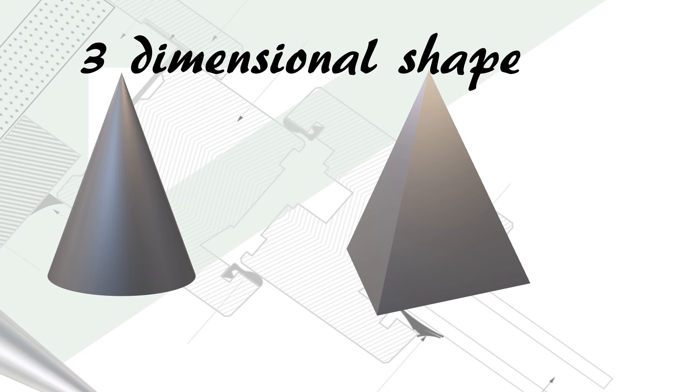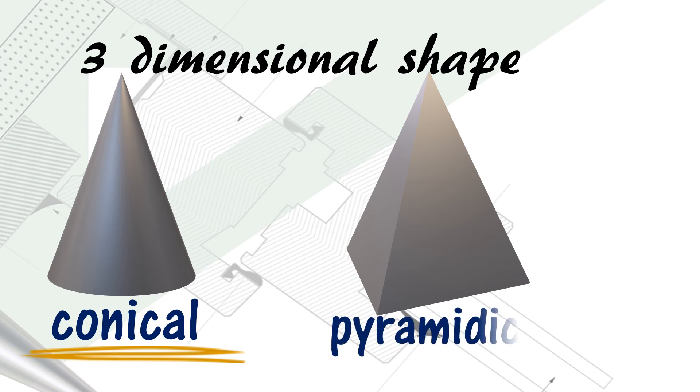You describe something as cone-shaped or conical. For pyramid, you say it is pyramidical or pyramid-shaped.